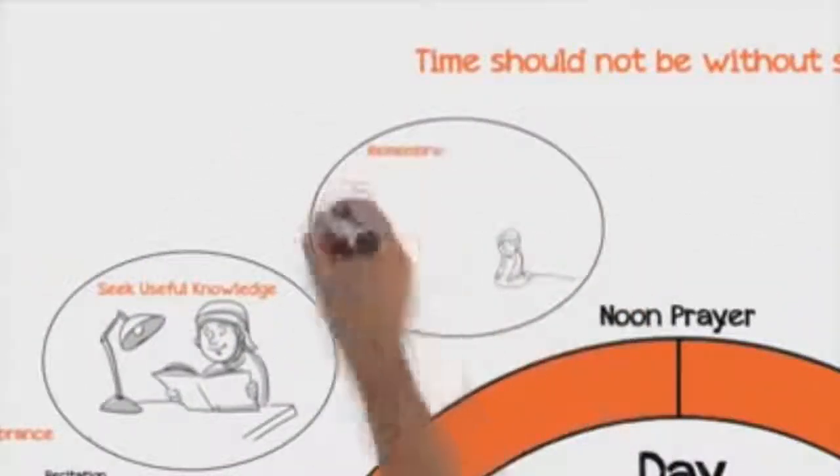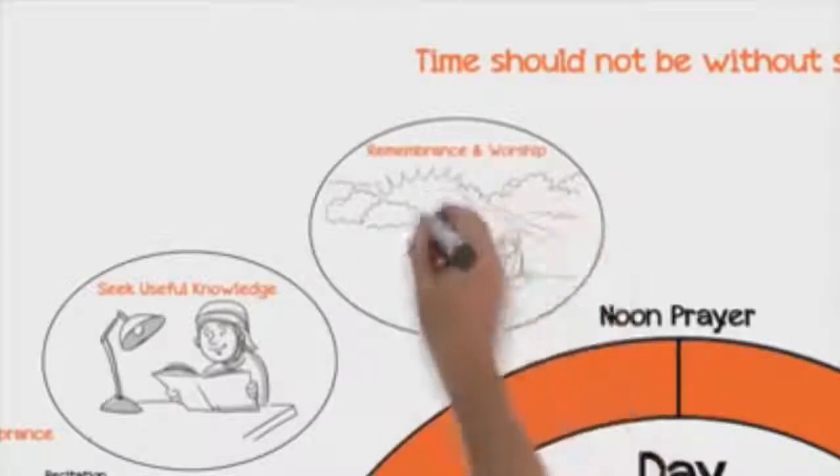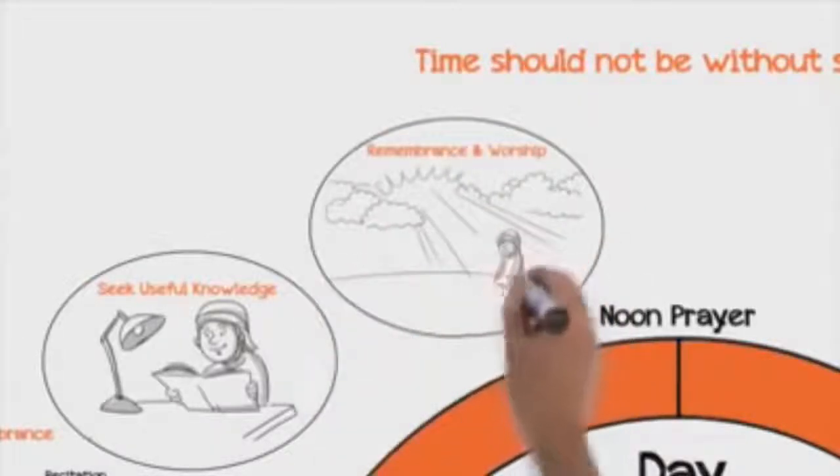If you are unable to acquire useful knowledge, use your time in extra prayers, or one of the four types of remembrance mentioned.